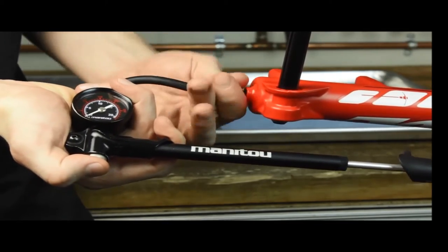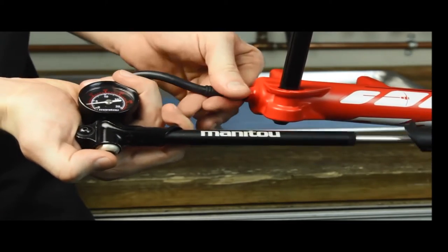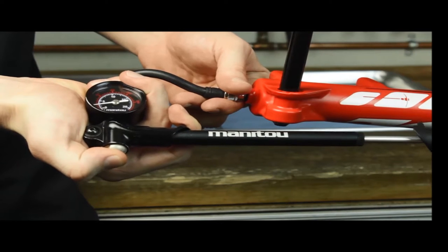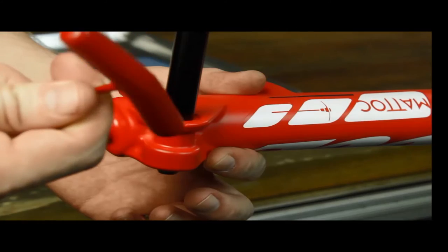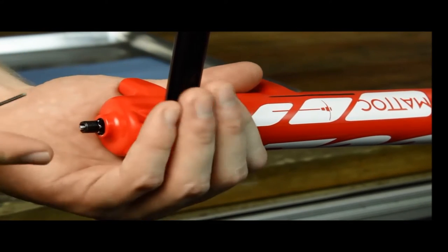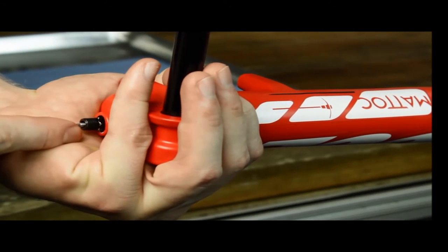Attach a shock pump to the valve stem and depress the pump pressure relief button to depressurize the air chamber. Remove the shock pump and depress the valve stem with an Allen wrench to be sure all of the pressure is purged from the system.